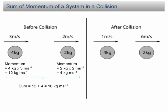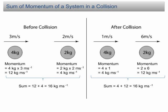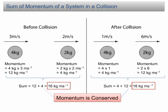After the collision, the momentum of the 4 kg ball becomes 4 kg·m/s, while the momentum of the 2 kg ball becomes 12 kg·m/s, and the sum of momentum is 16 kg·m/s. We can see that the sums of momentum before and after the collision are equal. In scientific terms, we say the momentum is conserved after the collision — the word 'conserve' means remain unchanged.